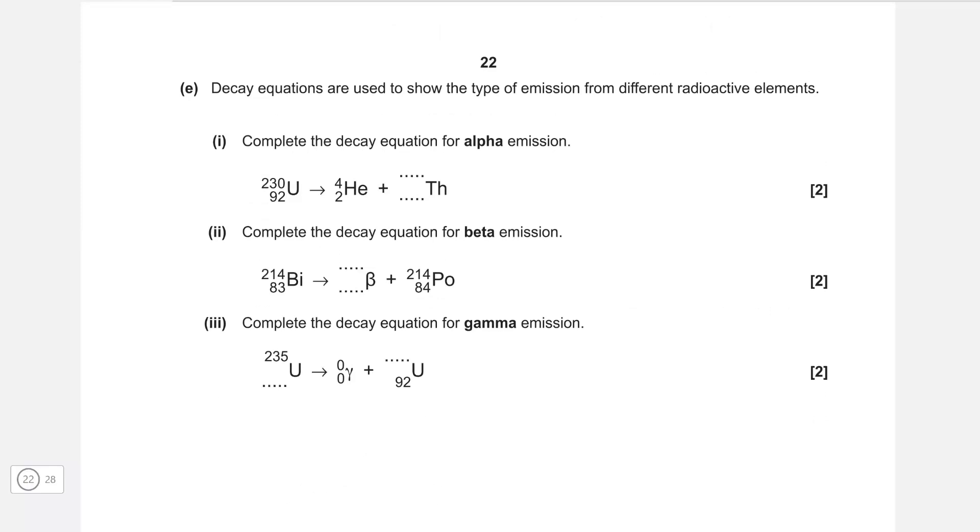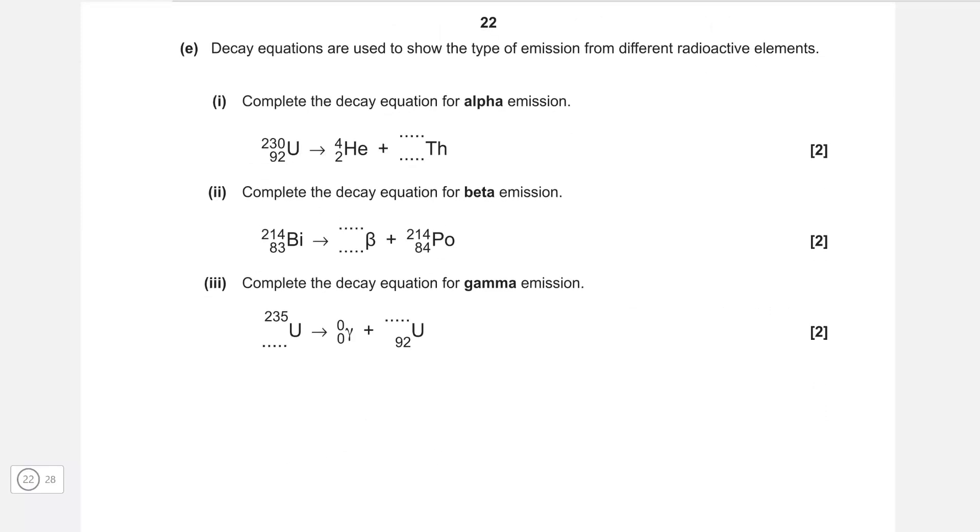Complete the decay equation for alpha emission. If we've lost an alpha particle, this number will be 230 take away 4, so it's going to be 226. And 92 take away 2 will just be thorium 90. Here is the equation for beta emission. The beta particle is just an electron, so it's going to be 0 and then minus 1.